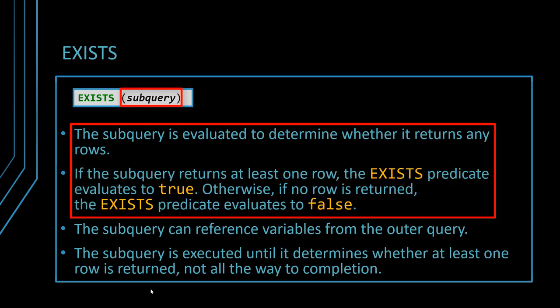Basically if the subquery returns at least one row EXISTS is going to evaluate to true. Now in our case we used it in the WHERE clause, so every time the condition evaluates to true that's going to include the record in the final result set. So that's why I said that it's doing filtering.